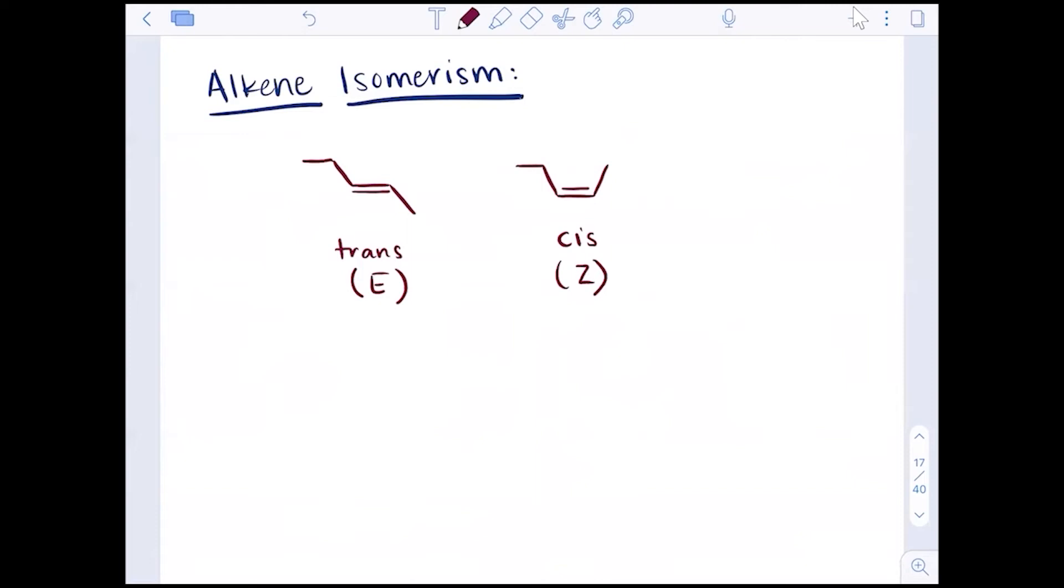Again, when we identify these alkenes as products, we would be able to start to identify which one is more favored. So if in a specific reaction we were to make isomers, stereo isomers, we have to consider steric hindrance on this. The trans is always more stable than the cis.